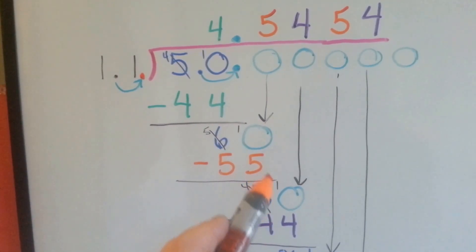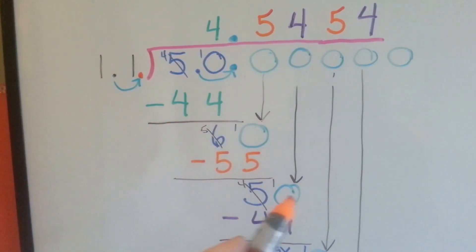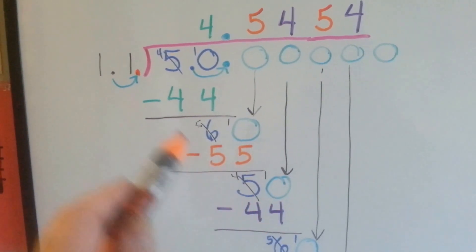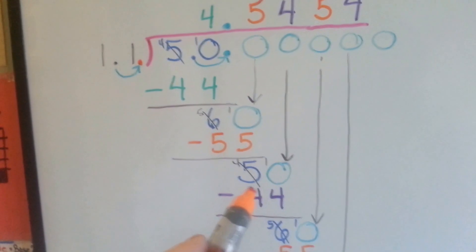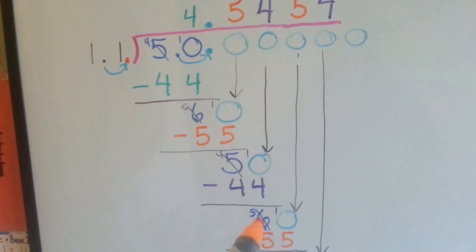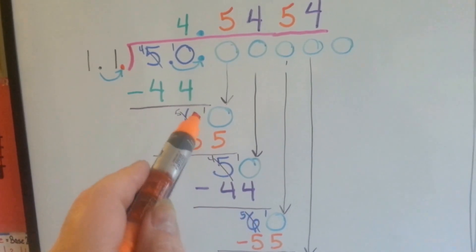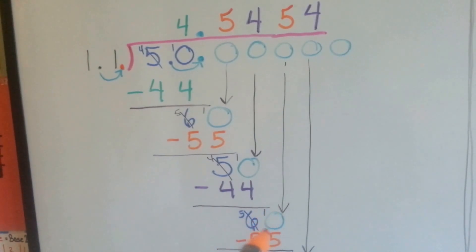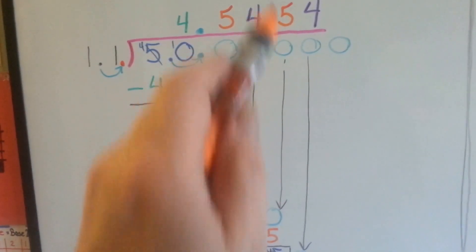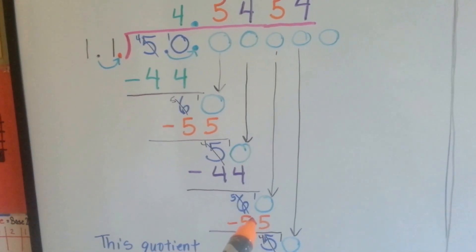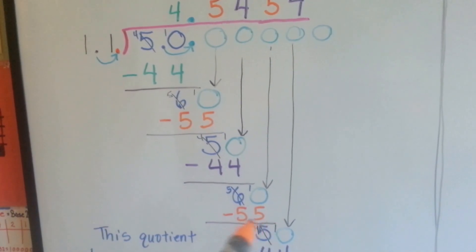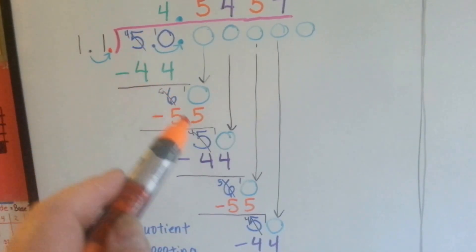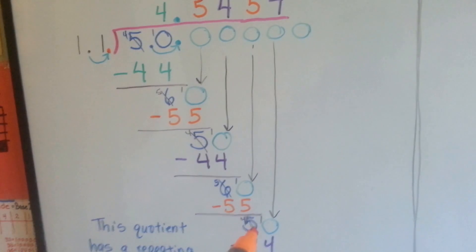Just like up here, I ran out of zeros so I added another one, and 11 fits into 50 four times, which is 44. I did my subtraction and got a 6, just like here, and had to add another 0. It goes in 5 times because it's 55 when you multiply. I did my subtraction and got a 5, just like here and here.